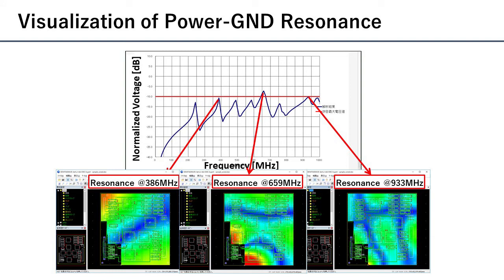After plane resonance analysis, you can see the voltage level at each frequency. By displaying voltage distribution at each frequency with particularly high voltage levels on the layout screen, it is possible to visually check the anti-nodes and nodes of the resonance easily.